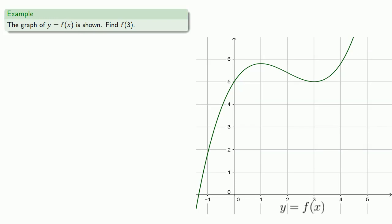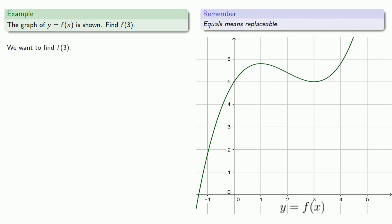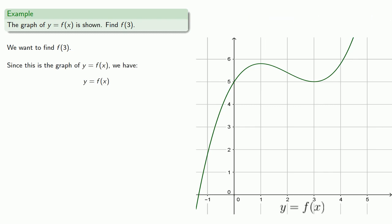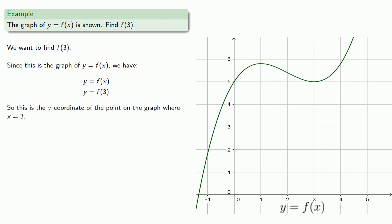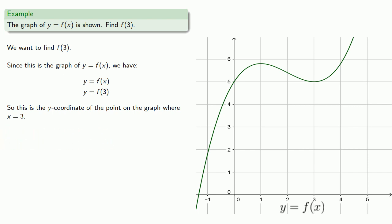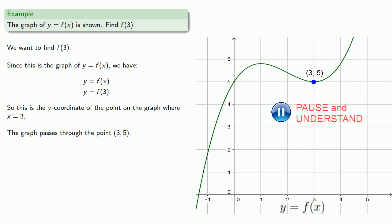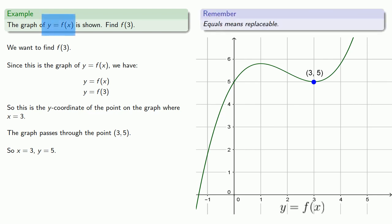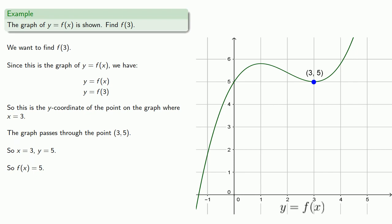An important thing to be able to do is to read values off the graph. So let's say we have the graph of y equals f of x and we want to find f of 3. Since equals means replaceable, we can replace x with 3. So f of 3 is the y-coordinate of the point on the graph where x equals 3. The graph passes through the point 3, 5. Since y equals f of x and x equals 3, we can replace and get f of 3 equals 5.